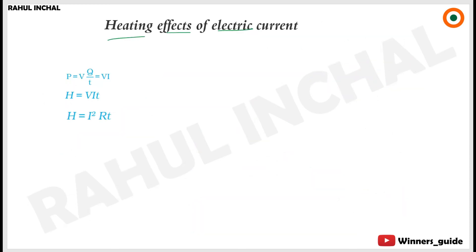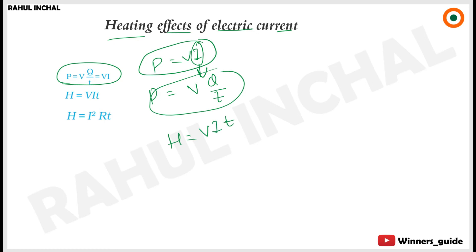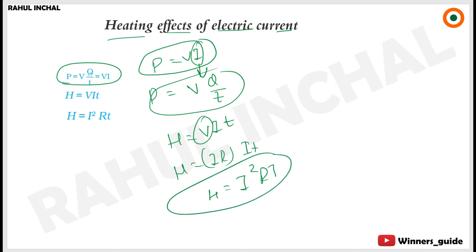Heating effect of electric current: P = VI. Since I = Q/T, the heat produced H = VIt. Substituting V = IR, we get H = IR · I · t = I²Rt. So the formula for heating effect is H = I²Rt.